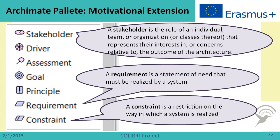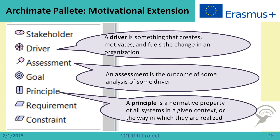The Archimate language also has extensions beyond the three core layers. One extension is the motivational extension, which has elements relating to the business model: stakeholders, requirements, constraints, goals, drivers, and principles. Principles are normative properties of all systems in a given context or the way they are realized — they are useful for stating specific constraints or compliance rules.